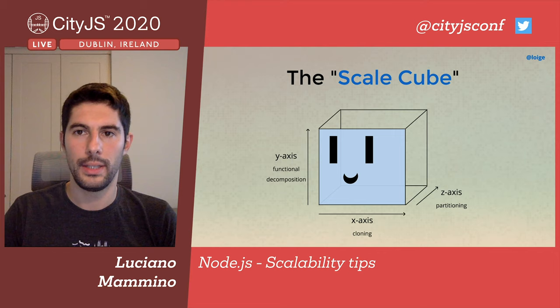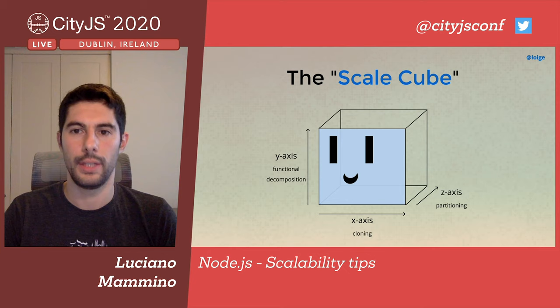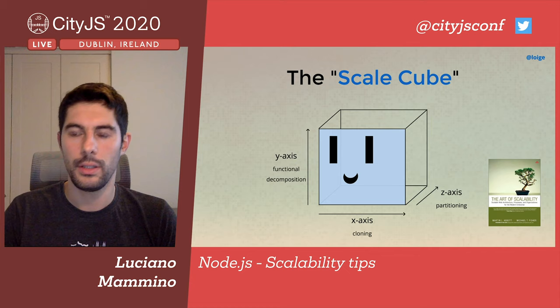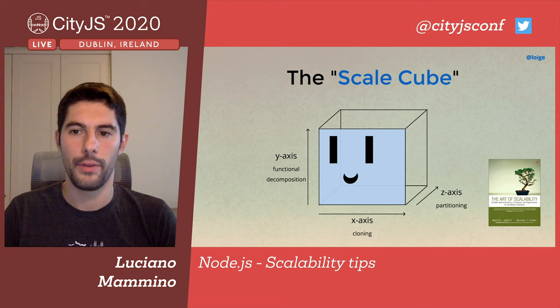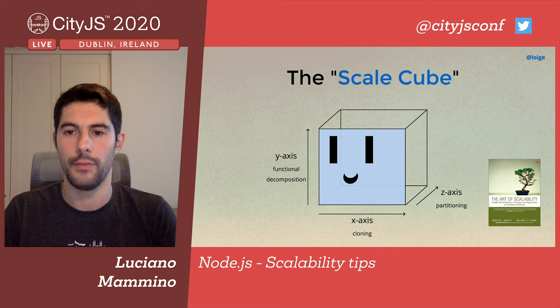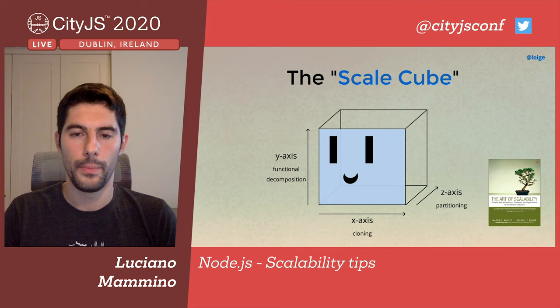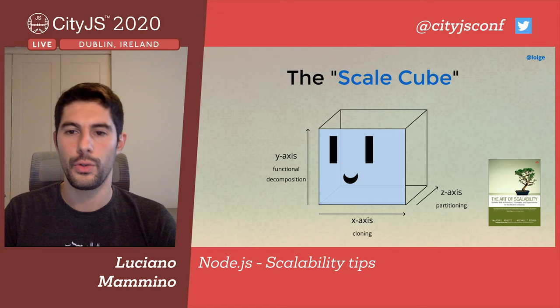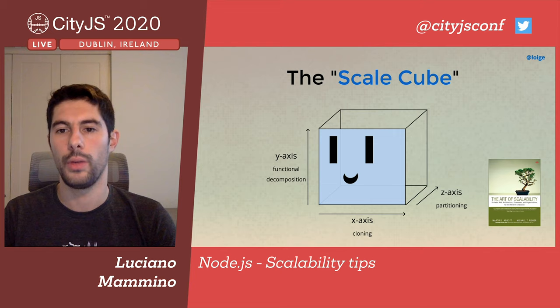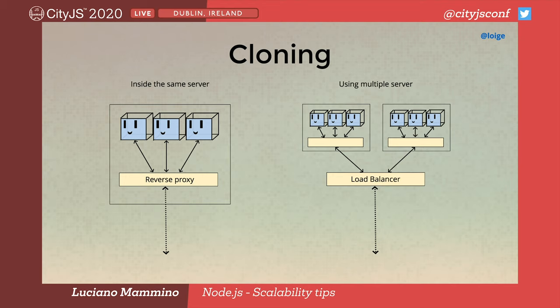There's a framework I like called the Scale Cube that helps identify different techniques for building architectures that scale. It comes from a book called The Art of Scalability — not the newest book, but still very fresh with super valuable lessons, especially for systems that need to scale quickly. It's called the Scale Cube because it defines three main techniques represented as the three axes of a cube: the X-axis is cloning, the Y-axis is functional decomposition, and the Z-axis is partitioning.